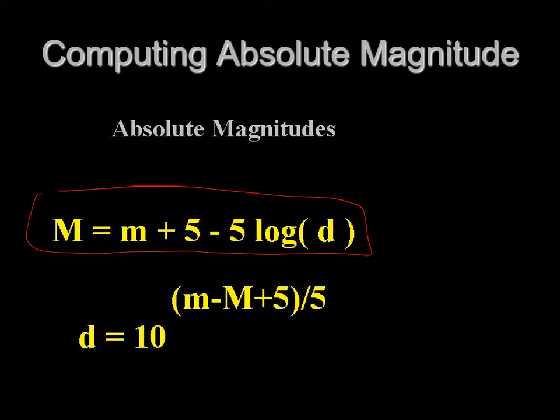We did a couple of examples with this. Suppose you somehow knew the absolute magnitude of something - certain stars have a known absolute magnitude, certain galaxies have a known absolute magnitude.